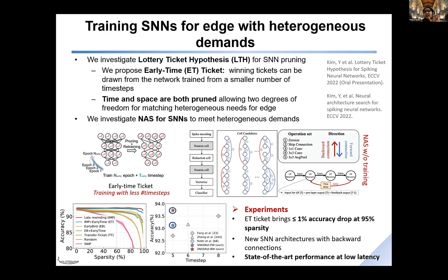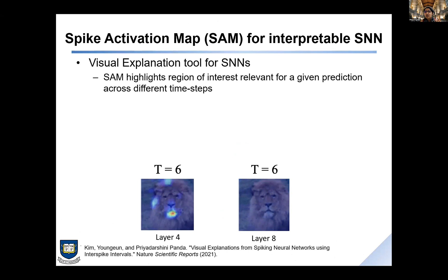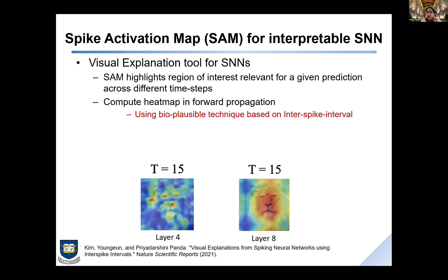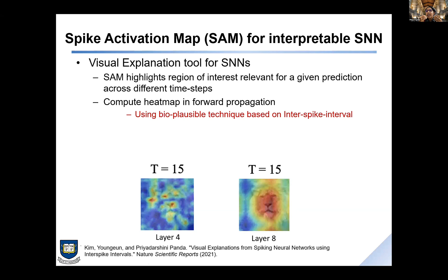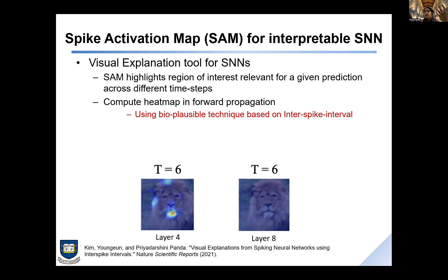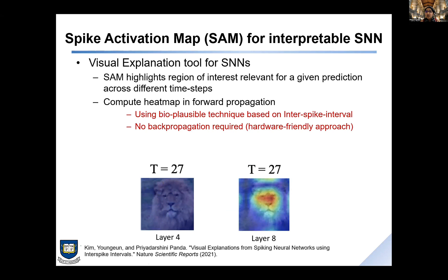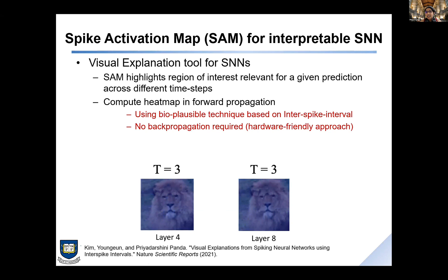From an interpretability perspective, we need to think about making spiking networks explainable. It turns out we don't need gradients to find an explainability map for spiking networks. Looking at temporal statistics — specifically interspike intervals — we can figure out which part of the input the model focuses on when making a prediction. At layer 4, the network focuses on different regions than at layer 8 at different time steps. This interspike-interval-based explainability map requires no backpropagation.